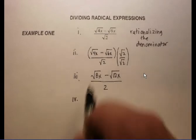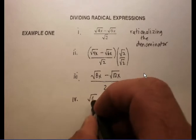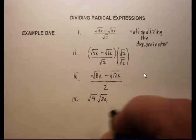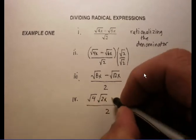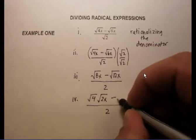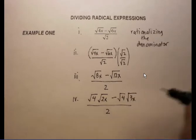Now in the square root of 8x, I see a perfect square. I see the square root of 4 and what I've got left over is the square root of 2x. Let's do it that way. In here I also see a perfect square. I've got the square root of 4 times the square root of 3x.